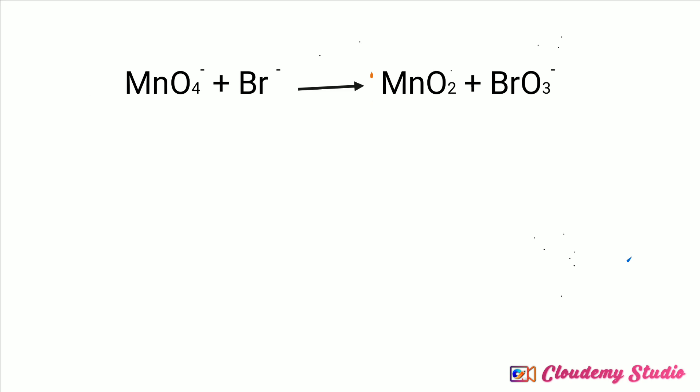Manganese dioxide is multiplied by 2, and bromine only 1 time. After multiplying manganese dioxide by 2, we balance the left-hand side: only 1 manganese is present there, so we multiply permanganate ion by 2 as well. Now we need to check the charges of the ions in the equation.